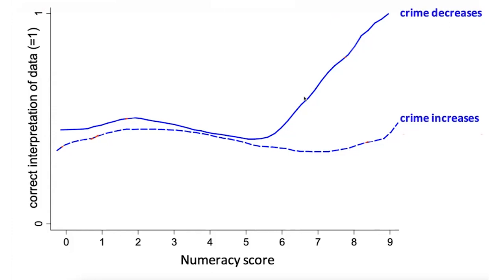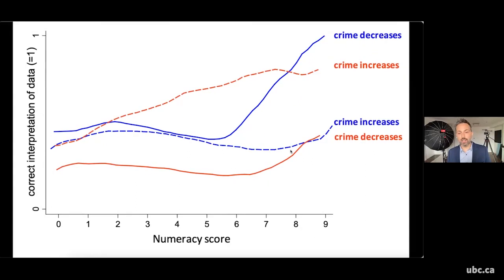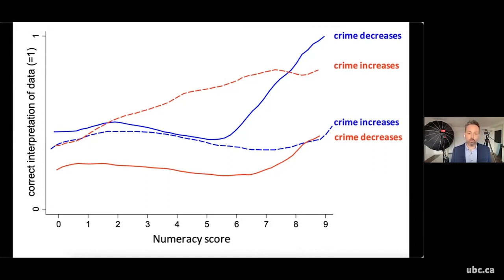You see the opposite effect with Republicans. So for Republicans, they were not really more likely - slightly more likely but not a lot more likely - to get the question right if it showed that banning handguns decreased crime, because that goes against their beliefs. But if it showed that crime increases, then they were more likely to spot that correctly, and again, the more numerate, the more likely they were to get it correct.